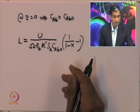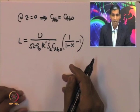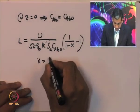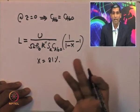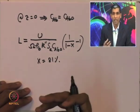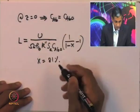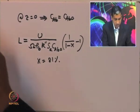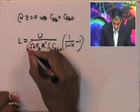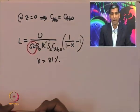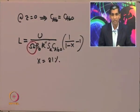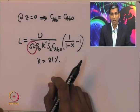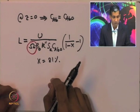Suppose the required conversion is 0.81, i.e., 81%. We need to find what length of reactor is required to achieve this conversion. The first step is to find the overall effectiveness factor Ω; once all other parameters are known, we can calculate the required reactor length.